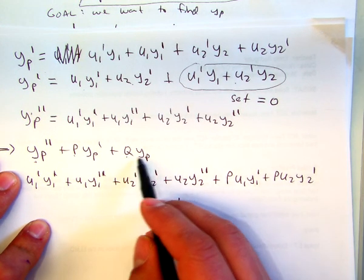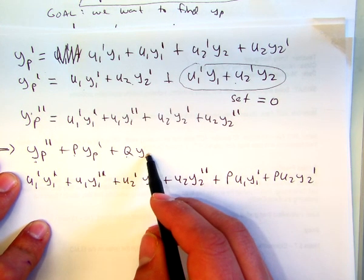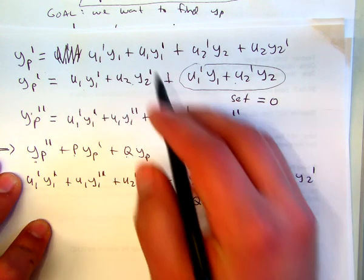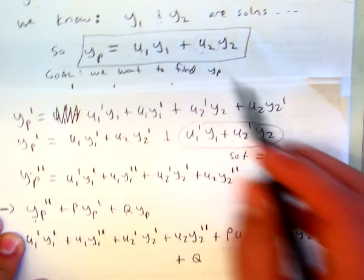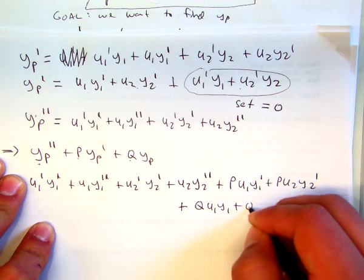Plus, and now I'm going to take q times the particular solution, so q, and then again our particular was up here. So u1 y1 plus q u2 y2.